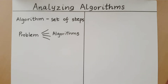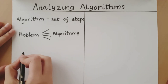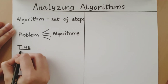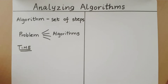So we need to compare algorithms on the basis of time. The faster algorithm is considered to be the better algorithm. In other words, the algorithm which takes the least amount of time is considered to be the best algorithm.